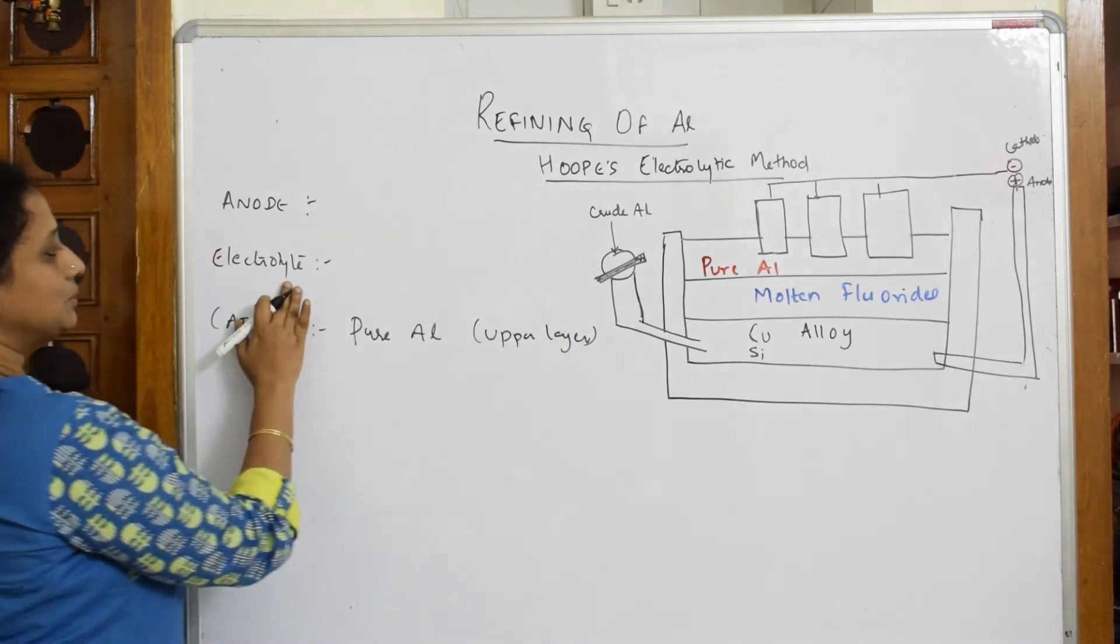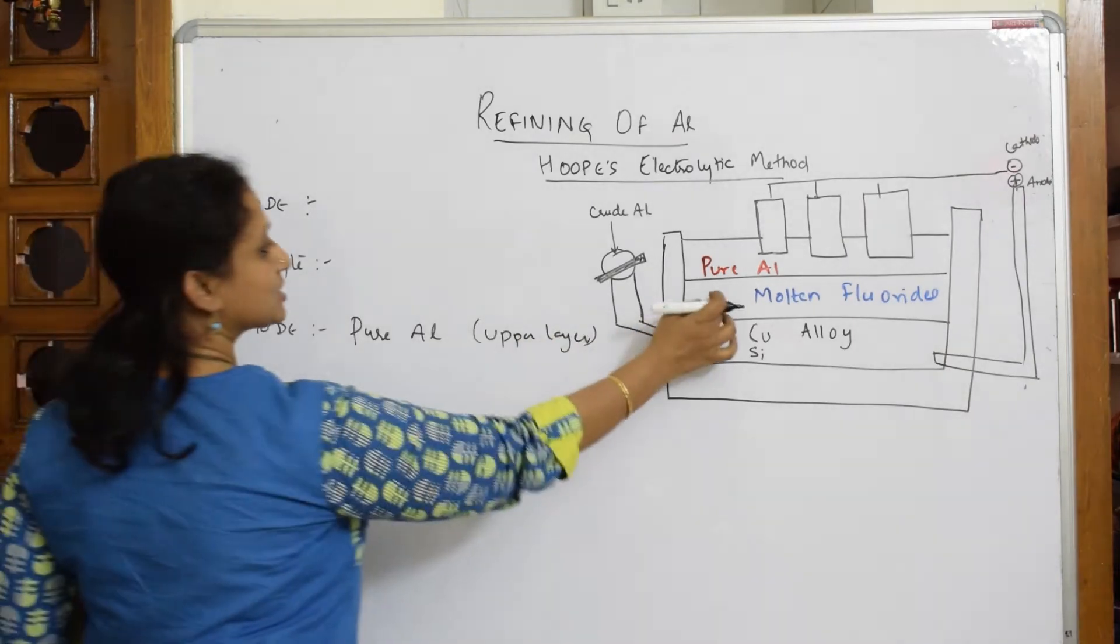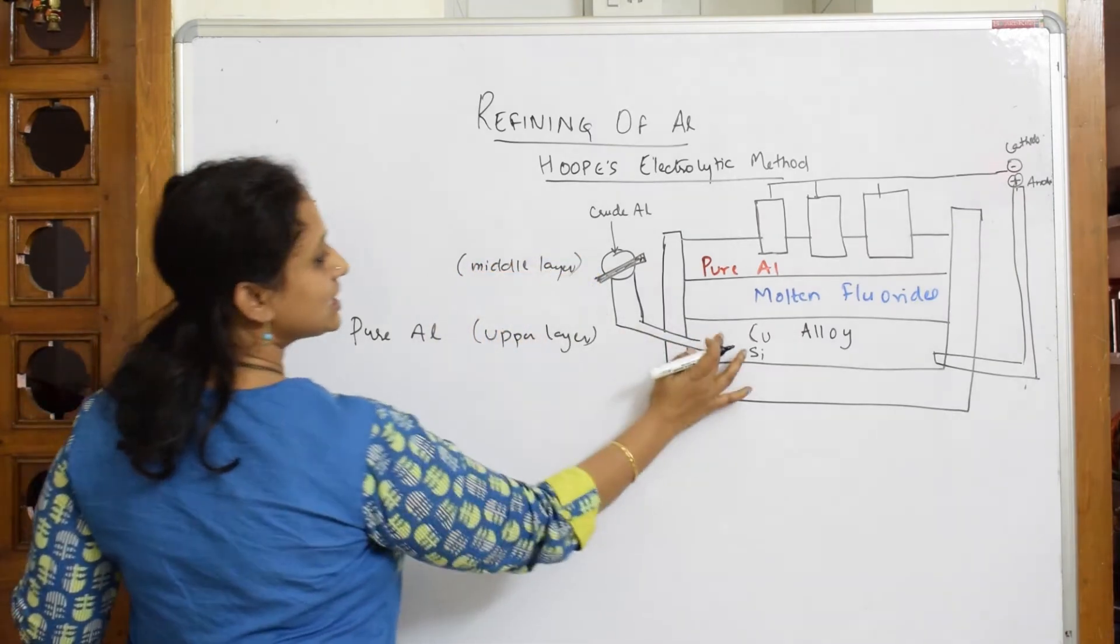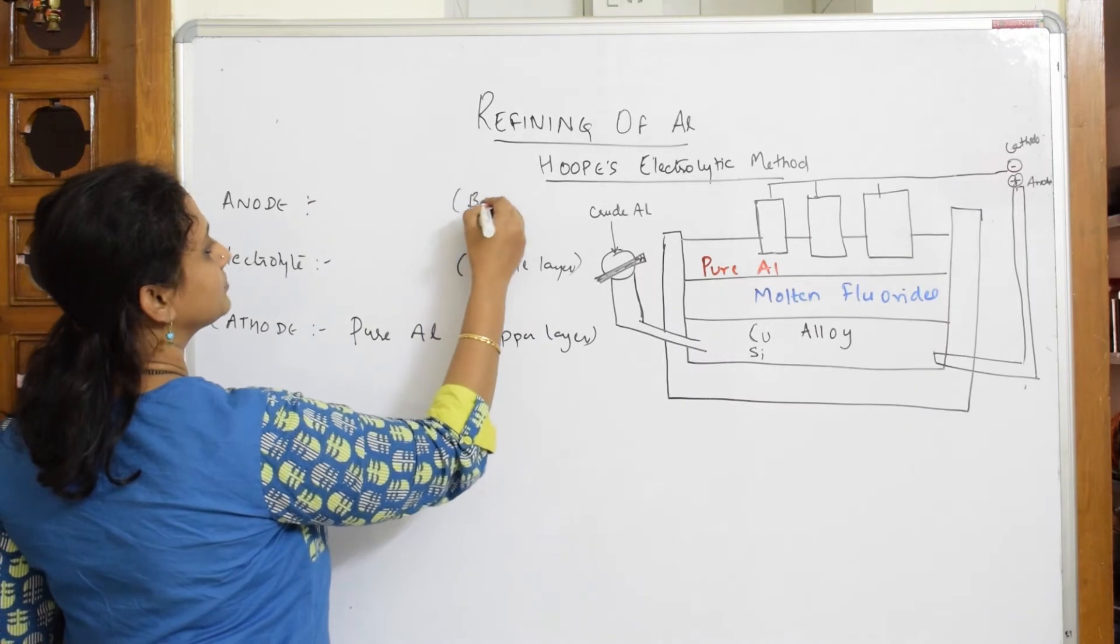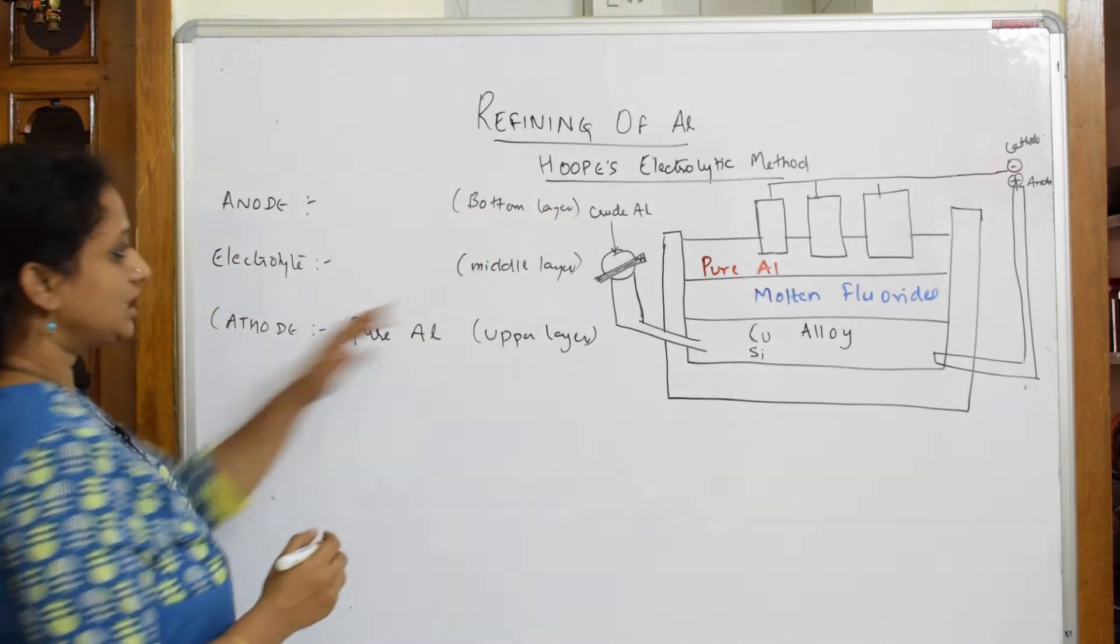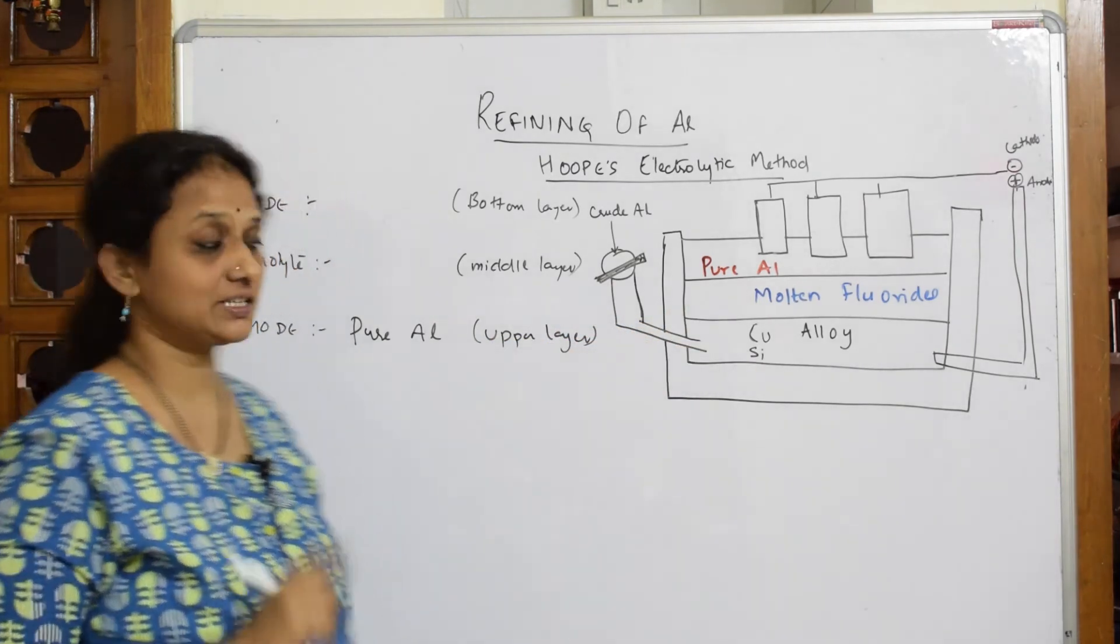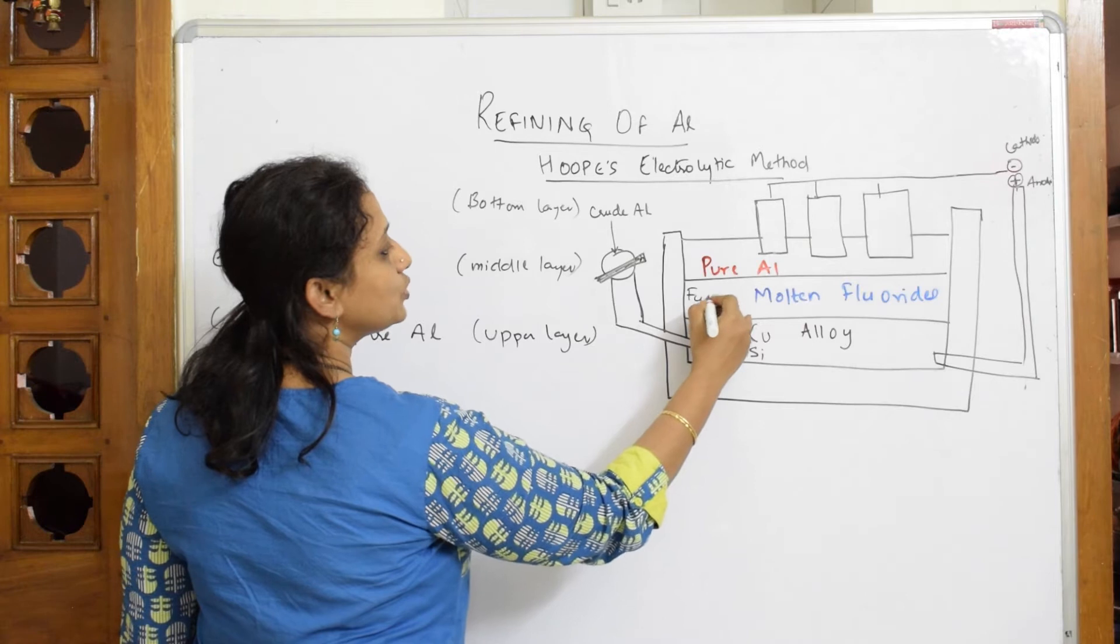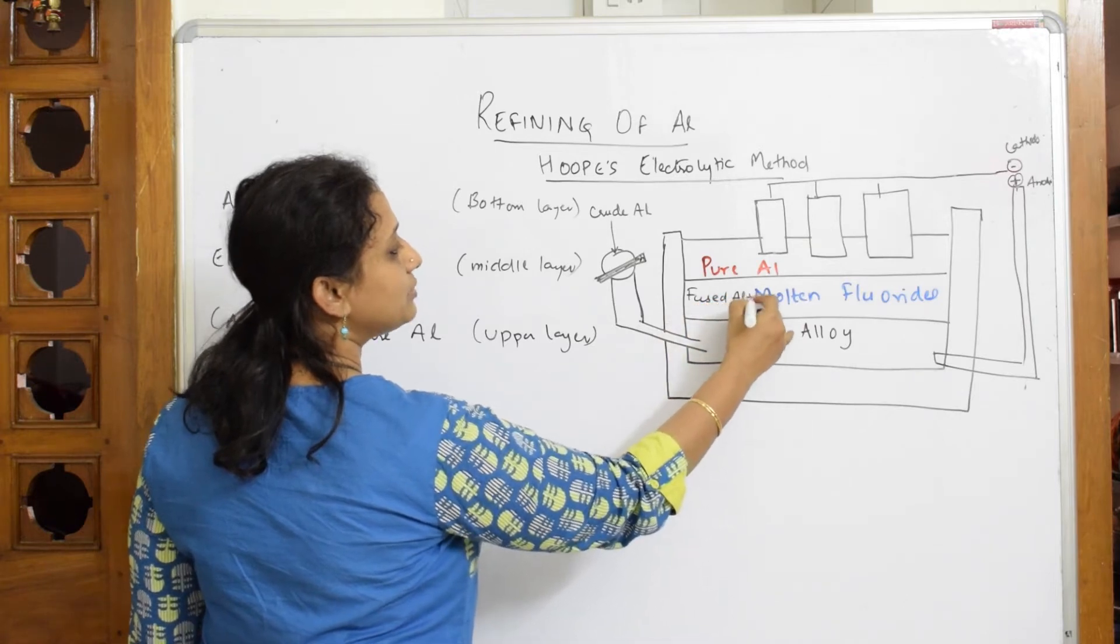Now the middle layer, that is your electrolyte, that is your middle layer. And the last layer is the bottom layer. I have written it in the reverse order, okay, bottom layer. Now let us see, in the middle layer you have molten fluorides.